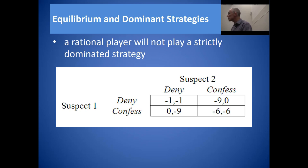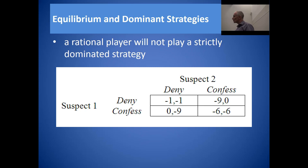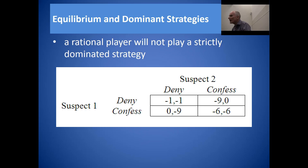When you studied consumer theory in your first year — indifference curves, budget constraints — one of the central tenets of that theory of consumer choice is that individuals choose bundles of goods so as to maximize their well-being; they choose outcomes that make them as well off as possible. That is the principle we refer to here. Individuals don't choose to do something if it always makes them worse off — that is what a strictly dominated strategy is: a strategy for which an alternative always gives a better payoff.